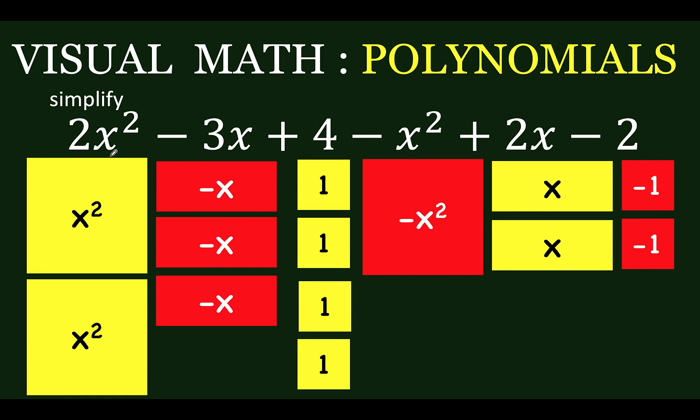So here we have 2x squared, so we have two yellow squares. Here we have negative 3x, so we have one negative x and another negative x and another negative x. Here we have positive 4, so 1, 2, 3, 4, 4 positive ones. Here we have one negative x squared, and here two x's, and here two negative ones.